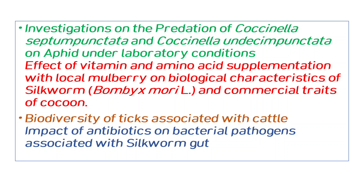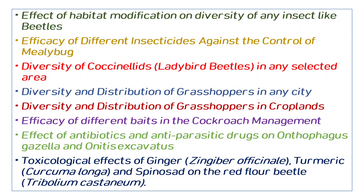In addition, for any insect's biodiversity — like ticks on cattle — you can see how many cattle are associated with it. Also, in relation to antibiotics, there are some bacteria in the gut of insects. You can study the effect of antibiotics on the diversity of an insect, like beetles.